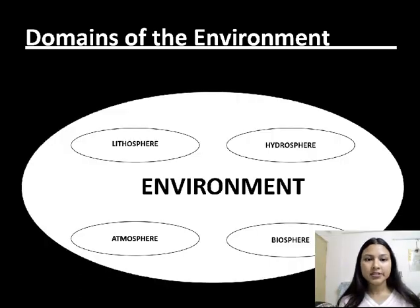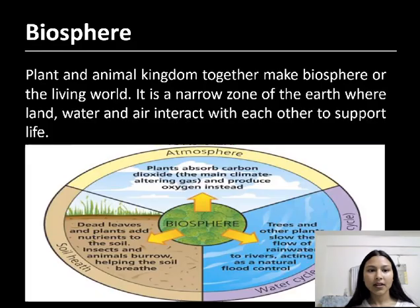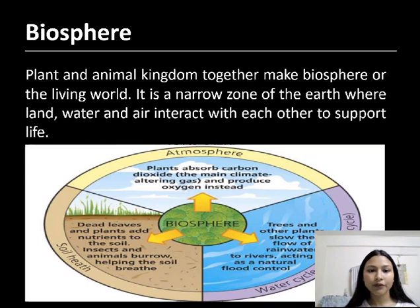Here is a concept map of the domains of earth: lithosphere, hydrosphere, atmosphere, and biosphere. Biosphere — plants and animals' kingdom together make the biosphere of the living world. It is a narrow zone of the earth where land, water, and air interact with each other to support life, as you can see in the image.